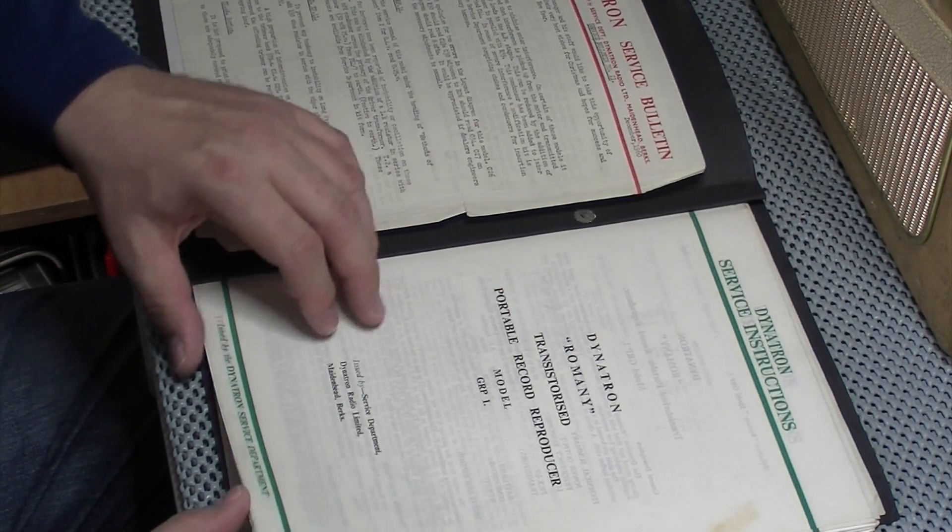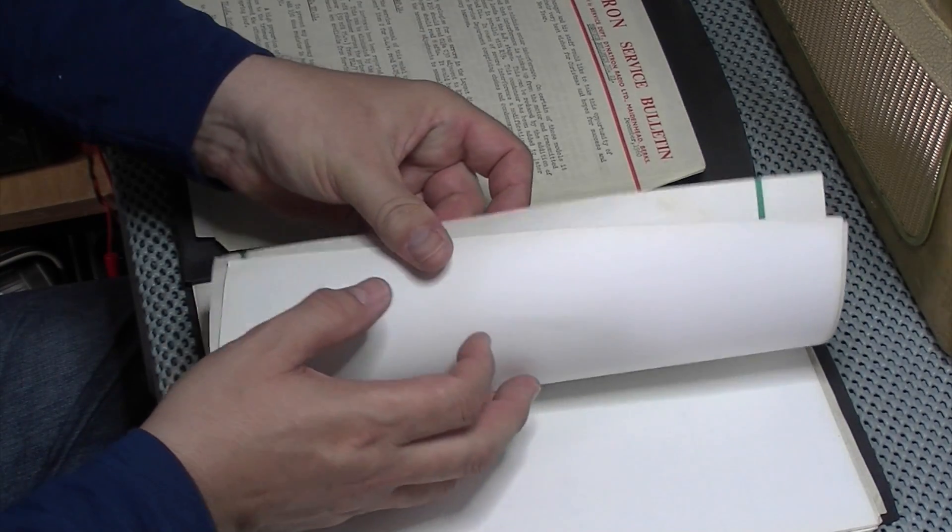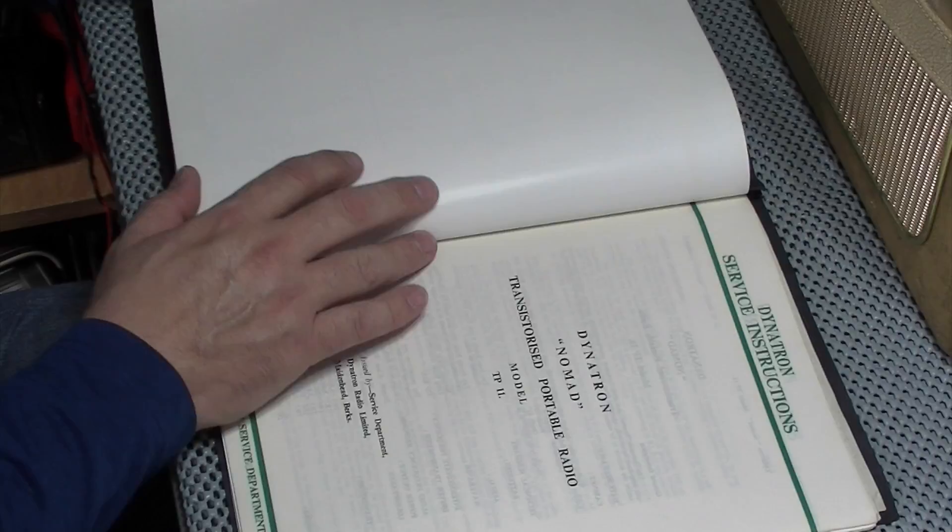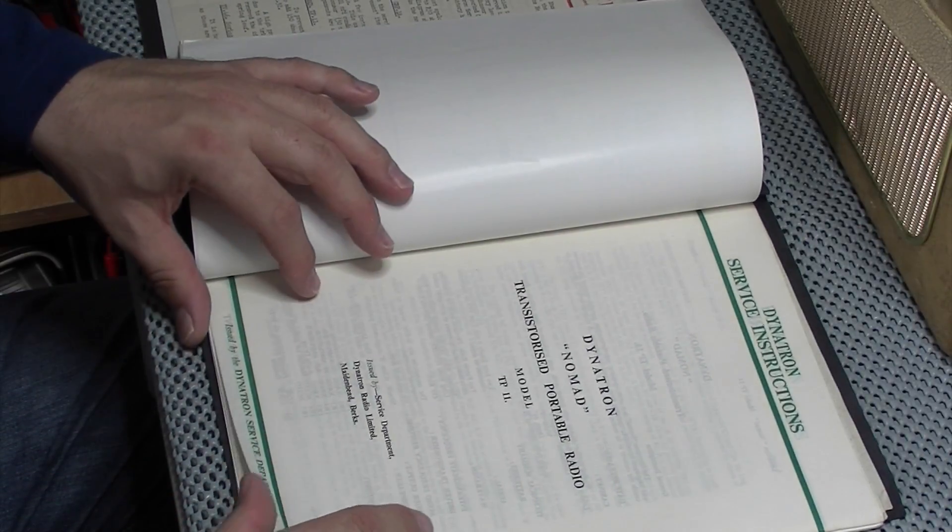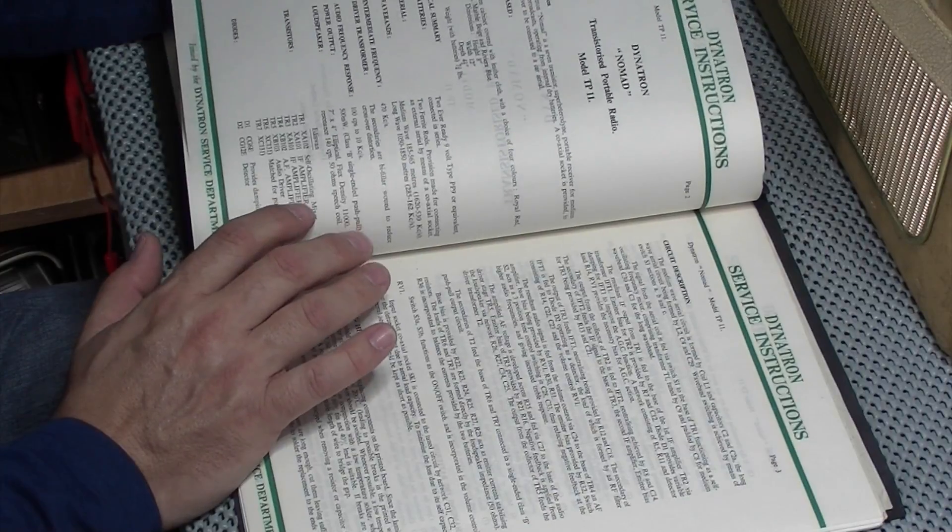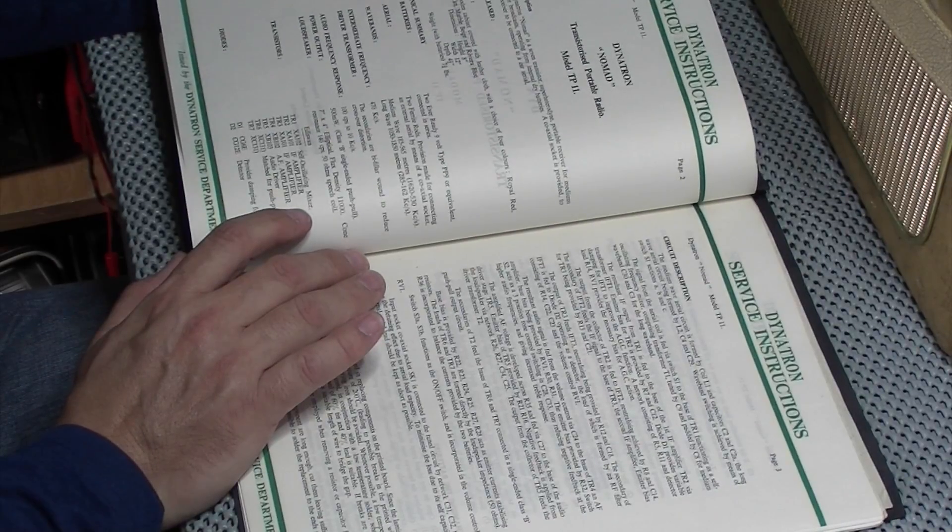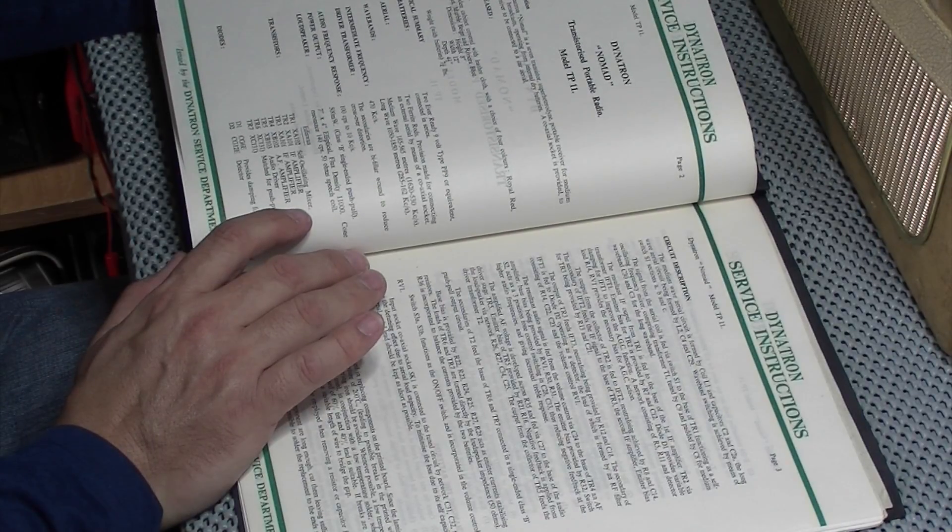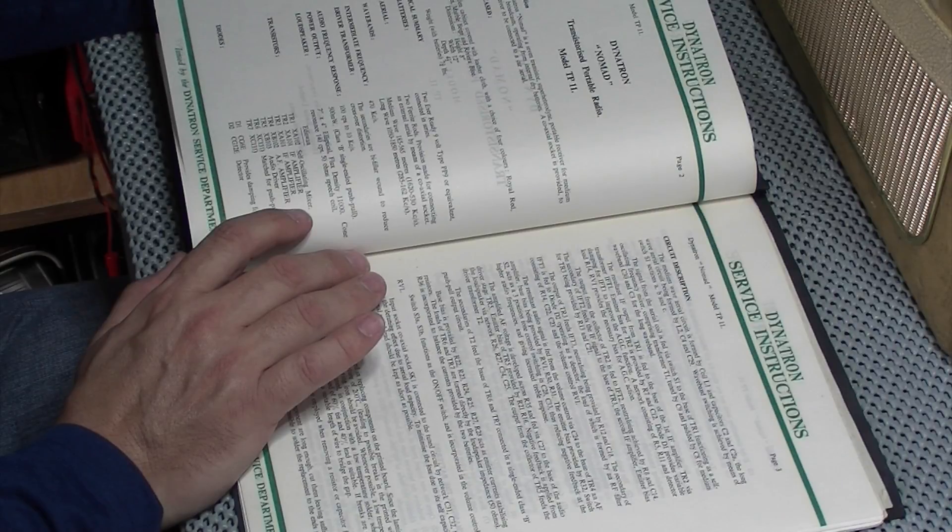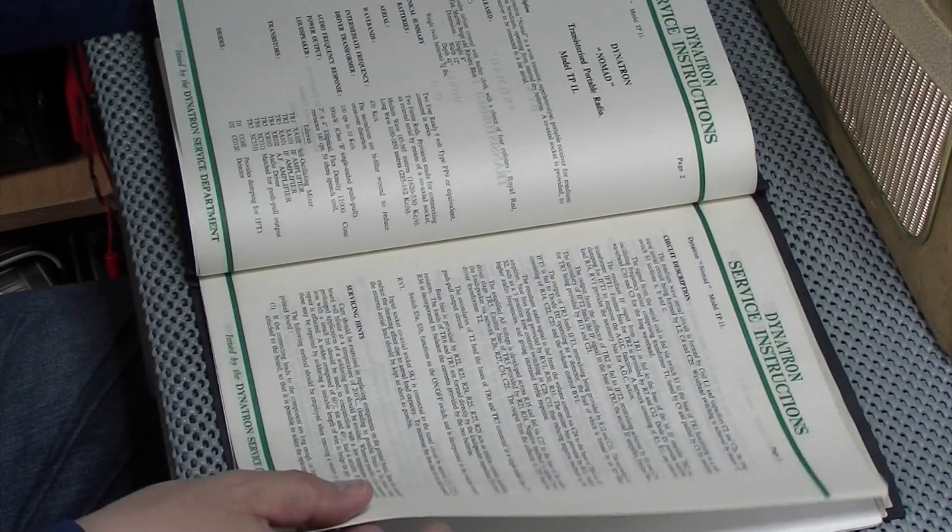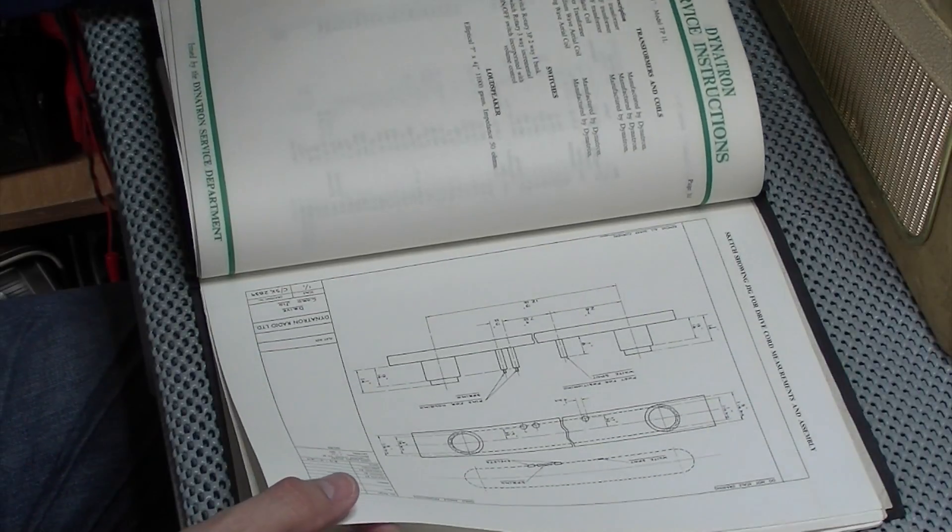This record player zero let Dynatron Romany. One we're interested in, this here, the Nomad. So again, very detailed and easy to read instructions as well. Superheterodyne portable receiver, medium and long wave only. It's got the socket for car aerial. Date released is blank, but as I say, it's got to be 1960 somewhere around there.